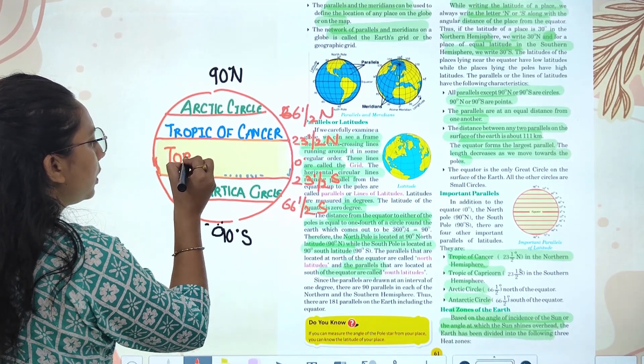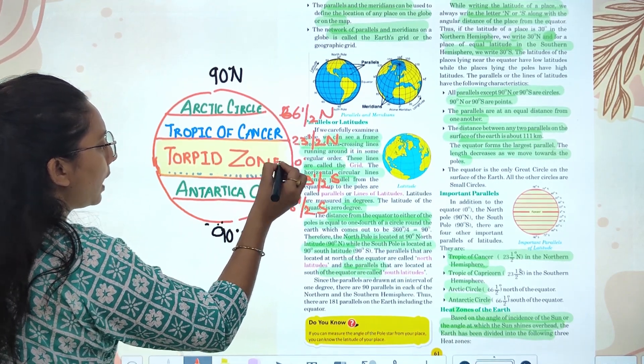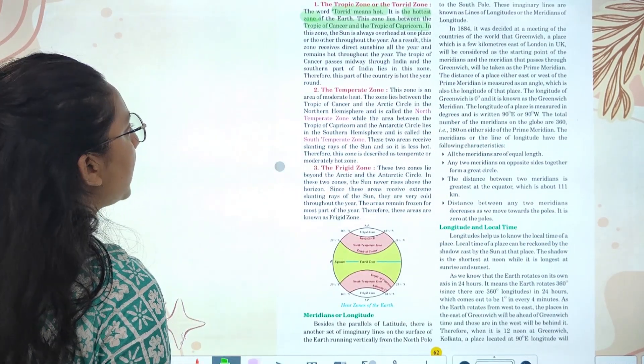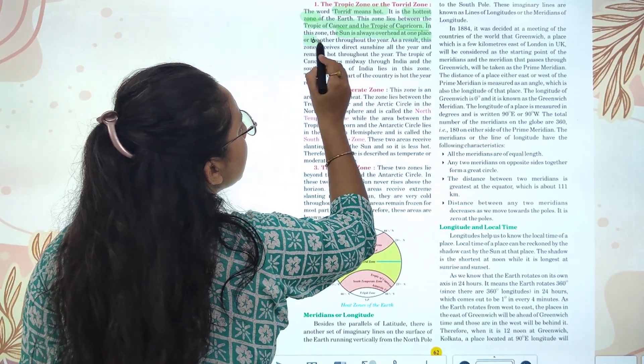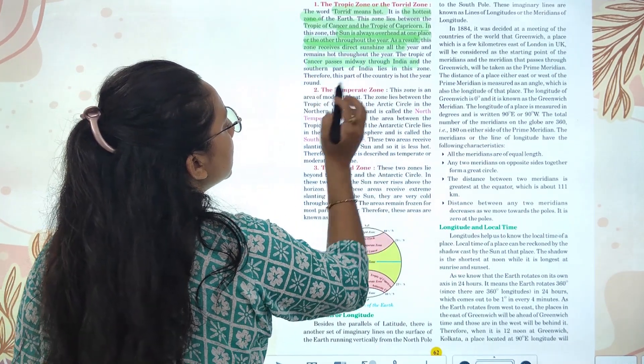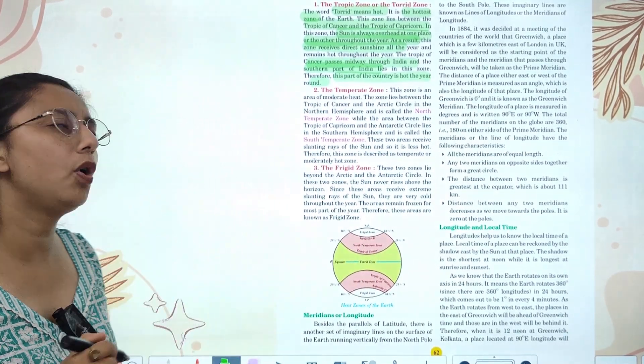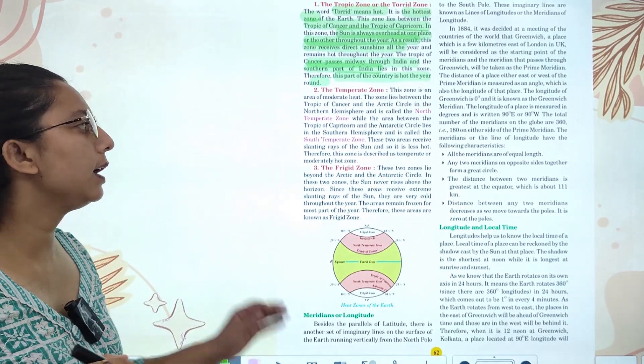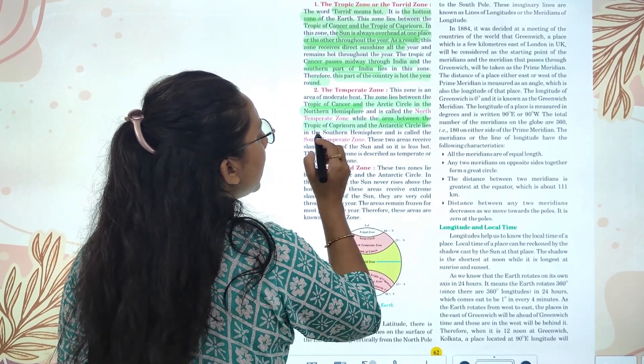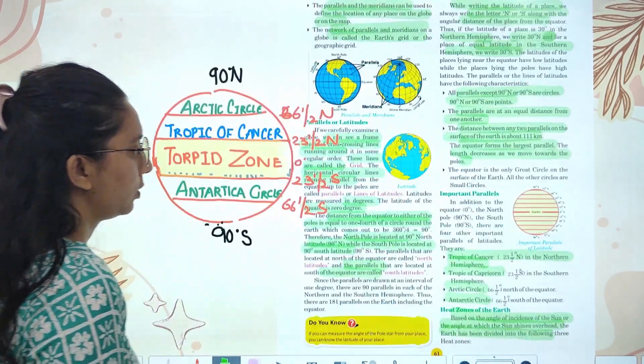This zone is known as torrid zone, between the Tropic of Cancer and Tropic of Capricorn. In this zone, sun is almost overhead throughout the year. This zone receives direct sunshine all year. The Tropic of Cancer is passing through India, midway through India, so the southern part of the country lies in the torrid zone. The area between Tropic of Cancer and Arctic Circle in Northern Hemisphere, and area between Tropic of Capricorn and Antarctic Circle in Southern Hemisphere is the temperate zone.